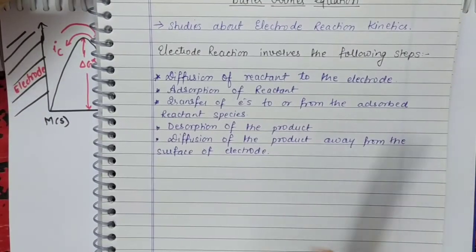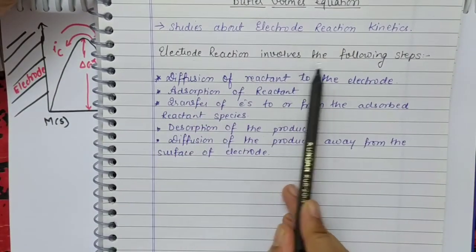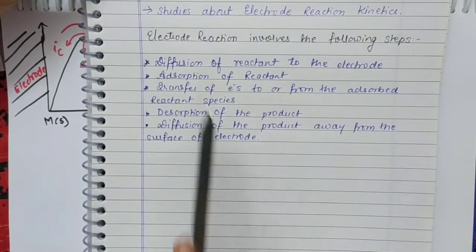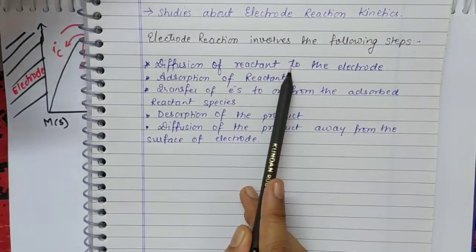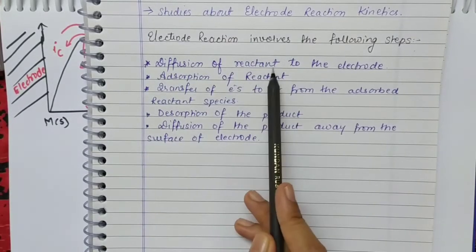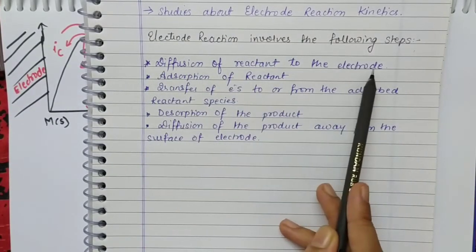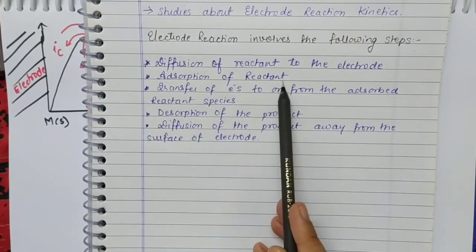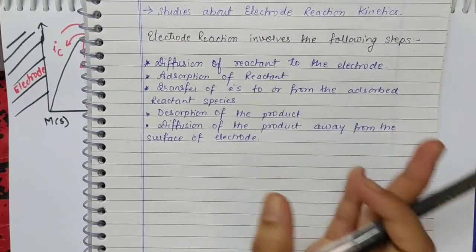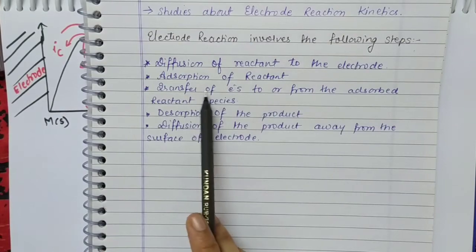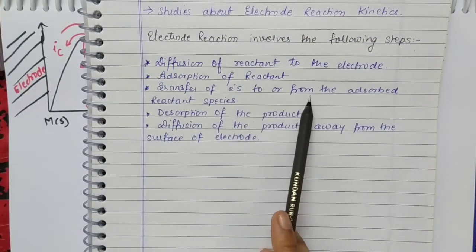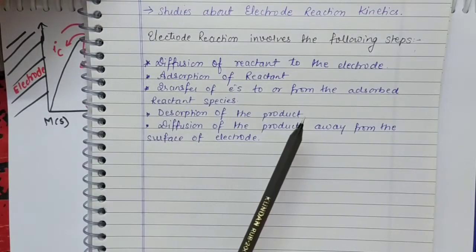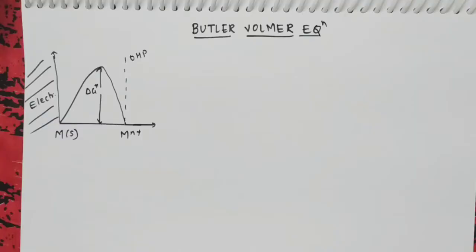Electrode reactions occur in the following steps. First, the reactant molecules which are present in the electrolyte diffuse toward the electrodes. Then, absorption of the reactant molecules occurs — the reactant molecules are absorbed onto the electrode. Then electrons are transferred, either from the electrolyte to the electrode or vice versa.